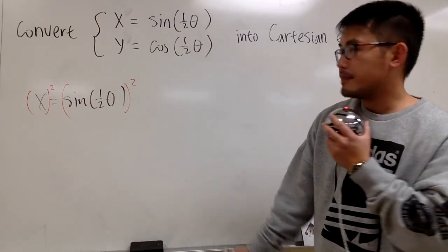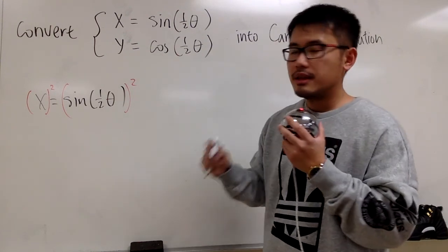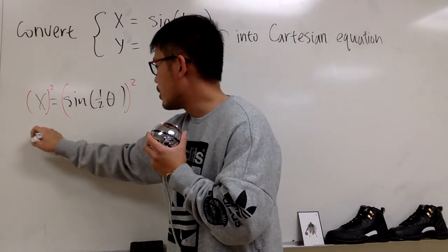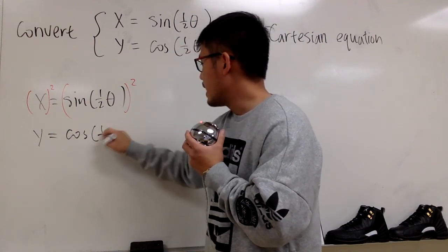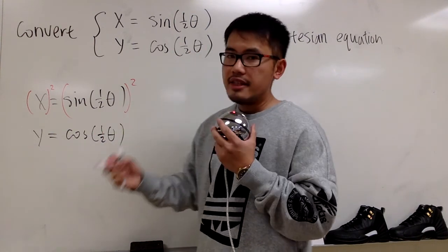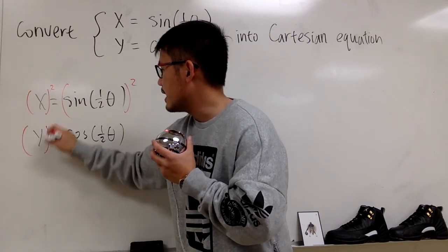And I'll do the same with the y equation. You will see, let me put on the original: y equals cosine of one-half theta. And then I will square this equation on both sides.